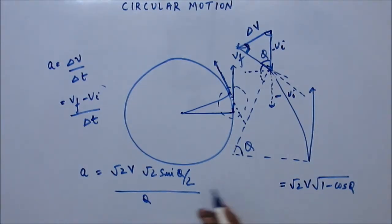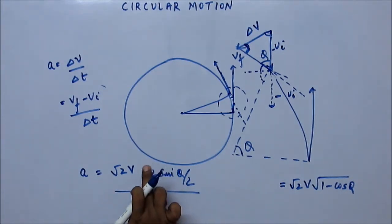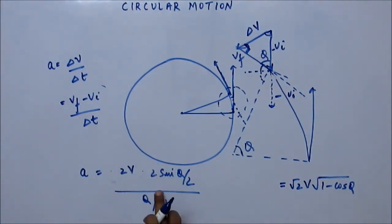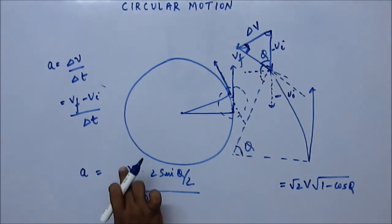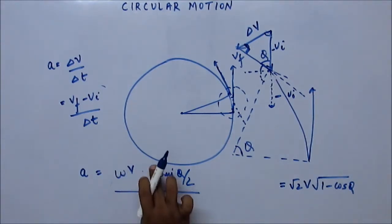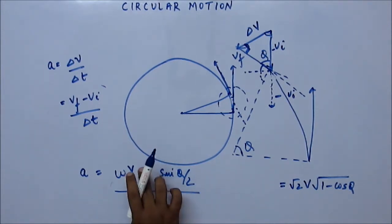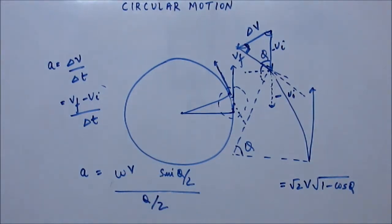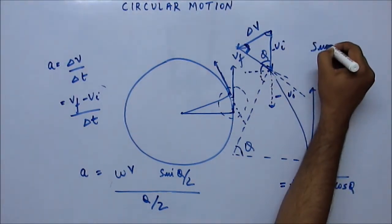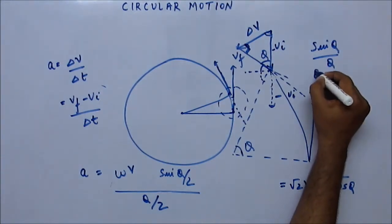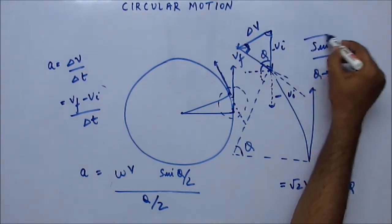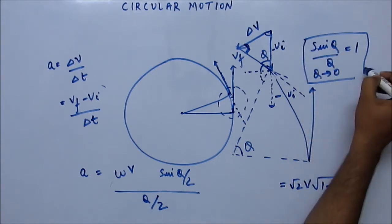This basically gives root 2 into root 2 equals 2, and we can bring this 2 down and ω up. Now, when θ is tending to 0, the limit of sin(θ)/θ is 1. If you have not studied limits yet — sine θ by θ as θ tends to 0 equals 1 — know this from now.